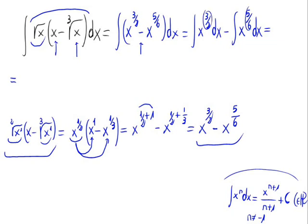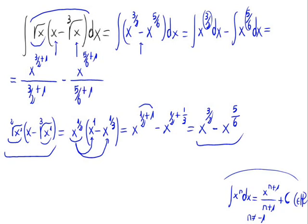Now, applying the formula we have down here, because the exponents are different from minus 1, we would have: x raised to 3 halves plus 1, divided by 3 halves plus 1, minus x raised to 5 sixths plus 1, divided by 5 sixths plus 1, plus the constant c, where c is from the set of real numbers.